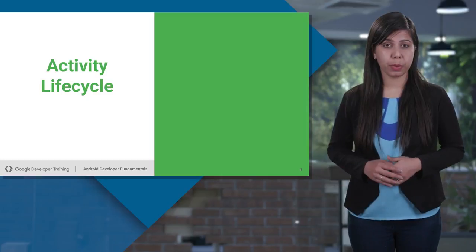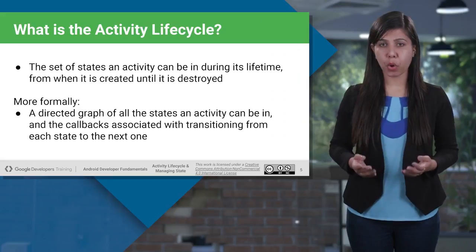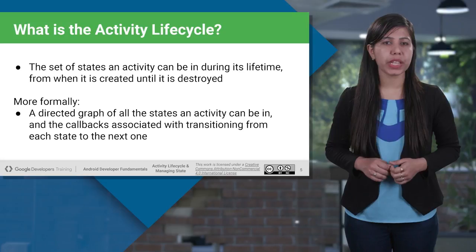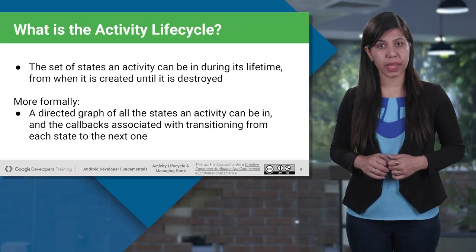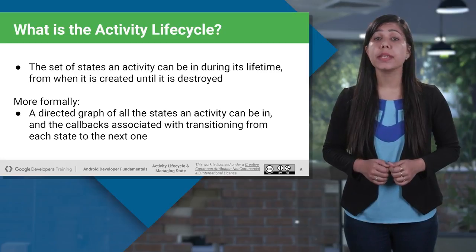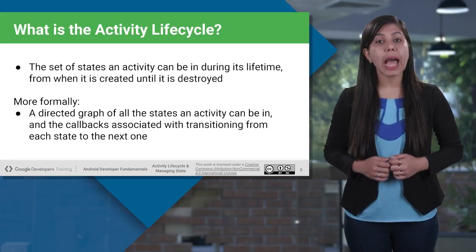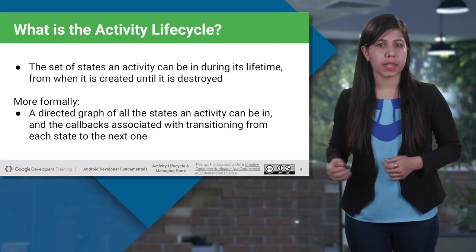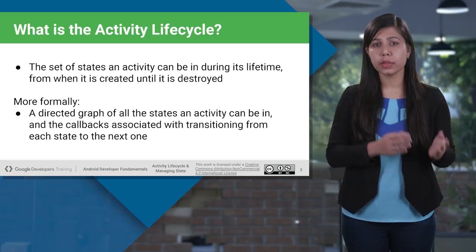As an Android developer it is really important to understand the activity life cycle. This important concept will help you build your Android application because you are going to deal with multiple activities and you need to understand how the operating system is going to affect the way the activity code is triggered. What we are going to look at here is a normal flow of an Android application — from when the activity is created until it gets destroyed, covering the set of states and methods called during transitions.